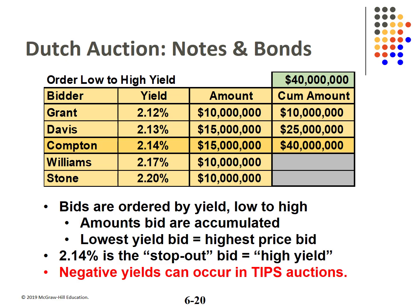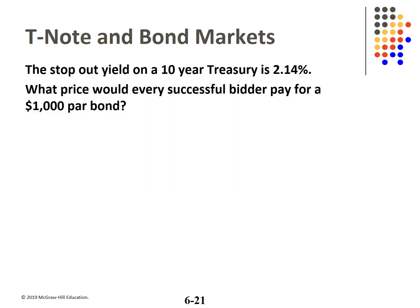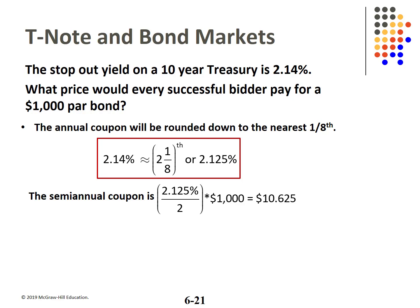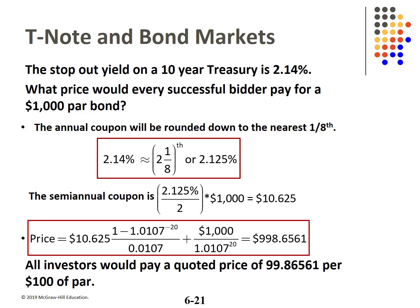Note that negative yields can occur but only in TIPS auctions. Compton's bid is the stop-out bid at 2.14%, which is what all winning bidders pay. The stop-out rate is rounded to the nearest eighth, so 2.14 is about 2 and an eighth, or 2.125. The semi-annual coupon is then $10.625. The price of the bond is determined using 2.14 divided by 2 as the discount rate, and all investors would pay 99.86561% of par.